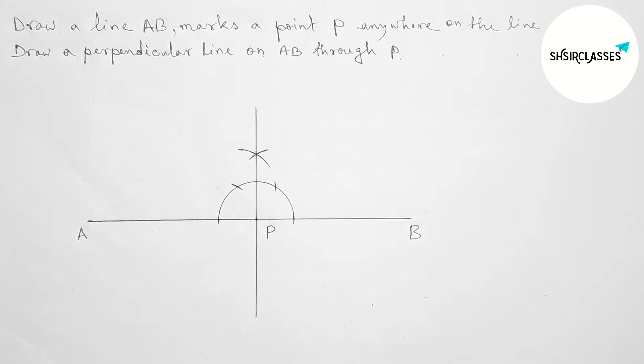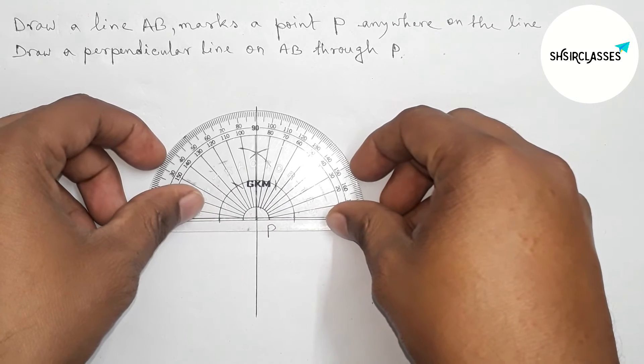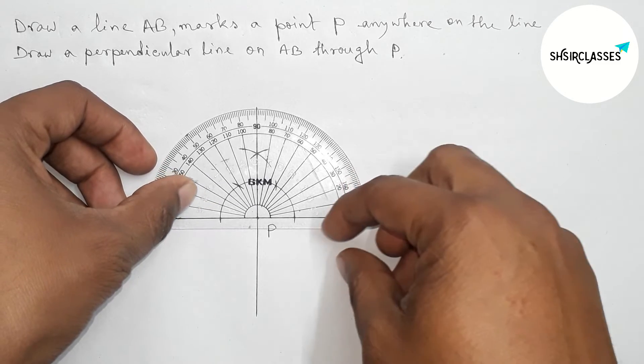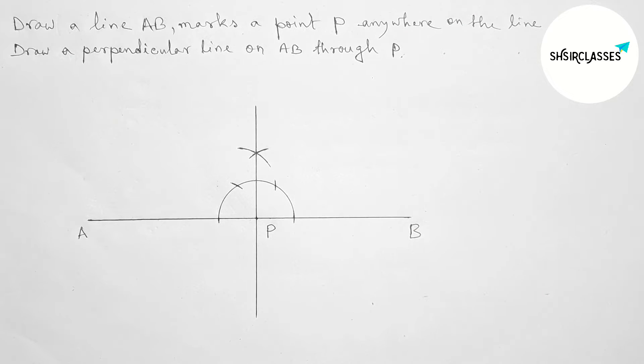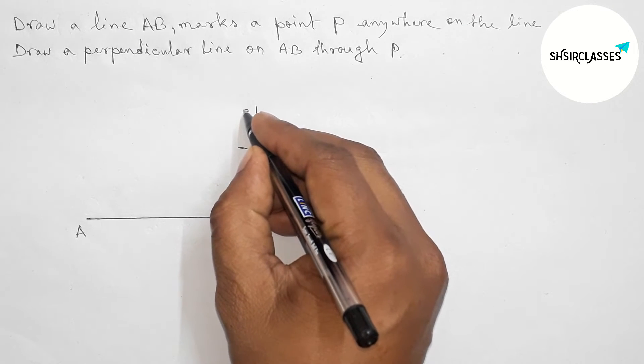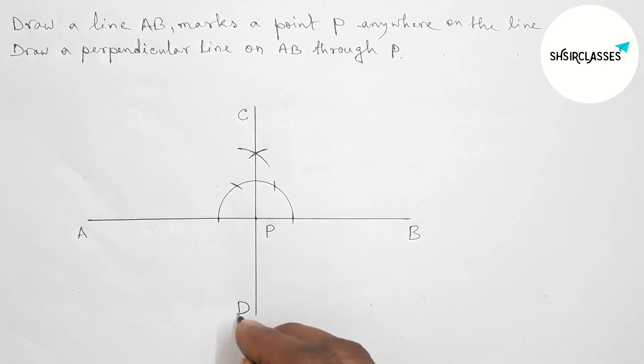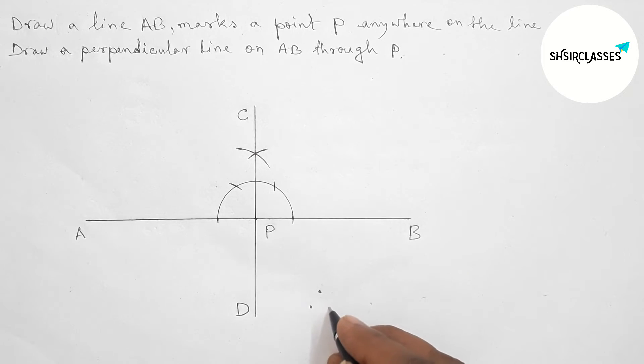This is perfectly perpendicular. Now checking with the help of a protractor, this is perfectly perpendicular or 90 degrees. Now taking point here C and here D, so CD is perpendicular to AB at point P.